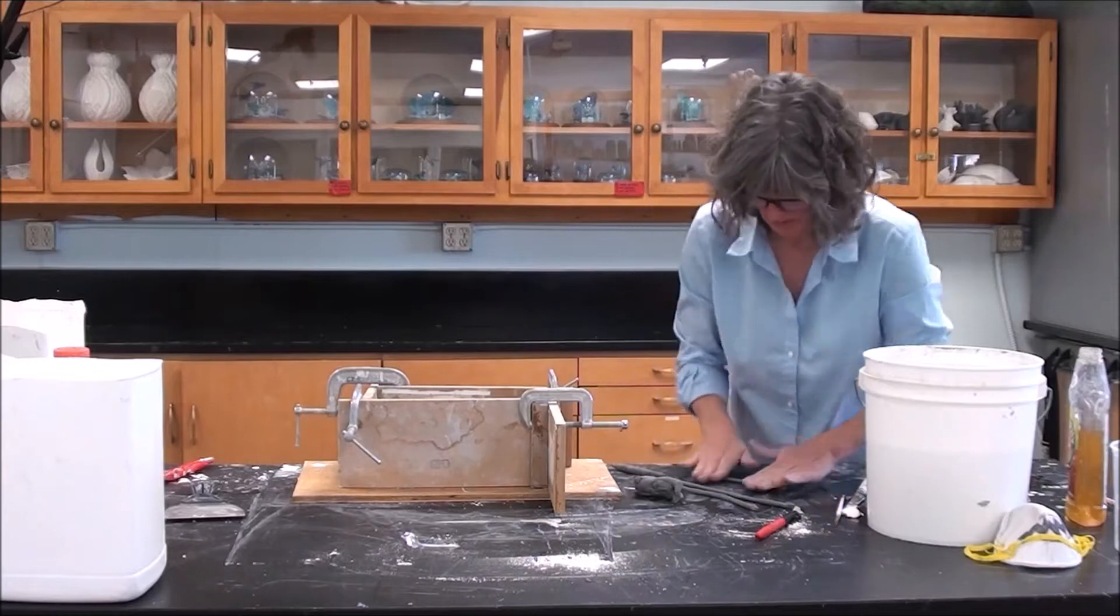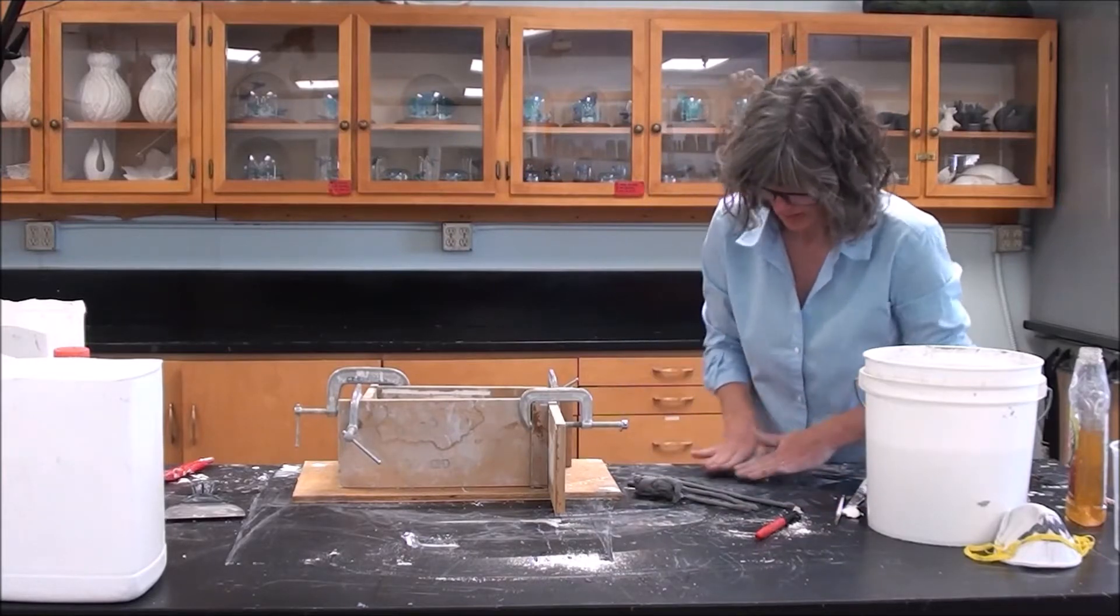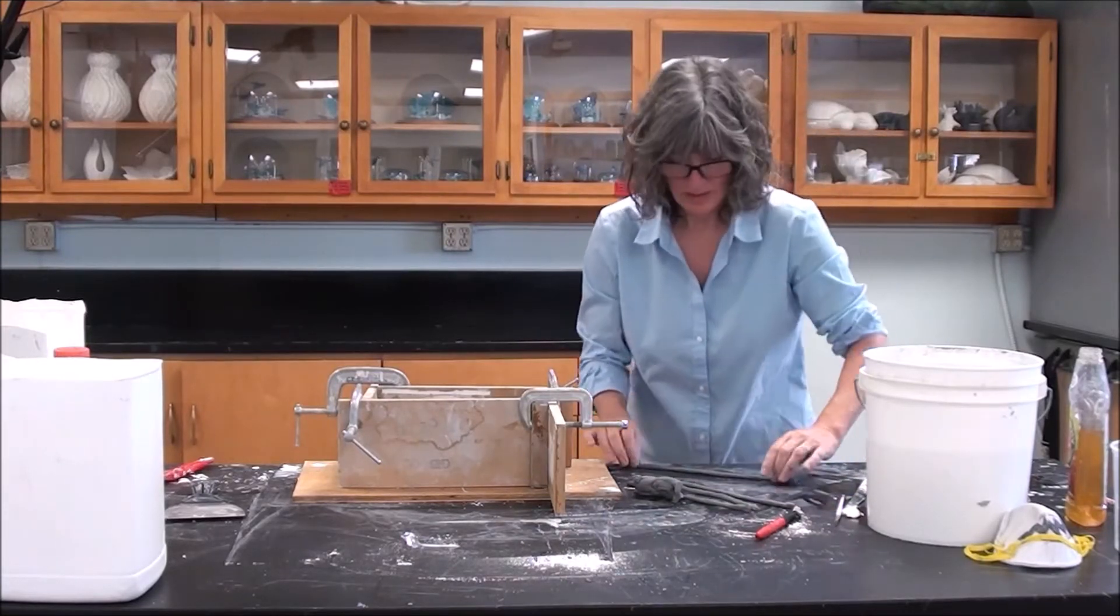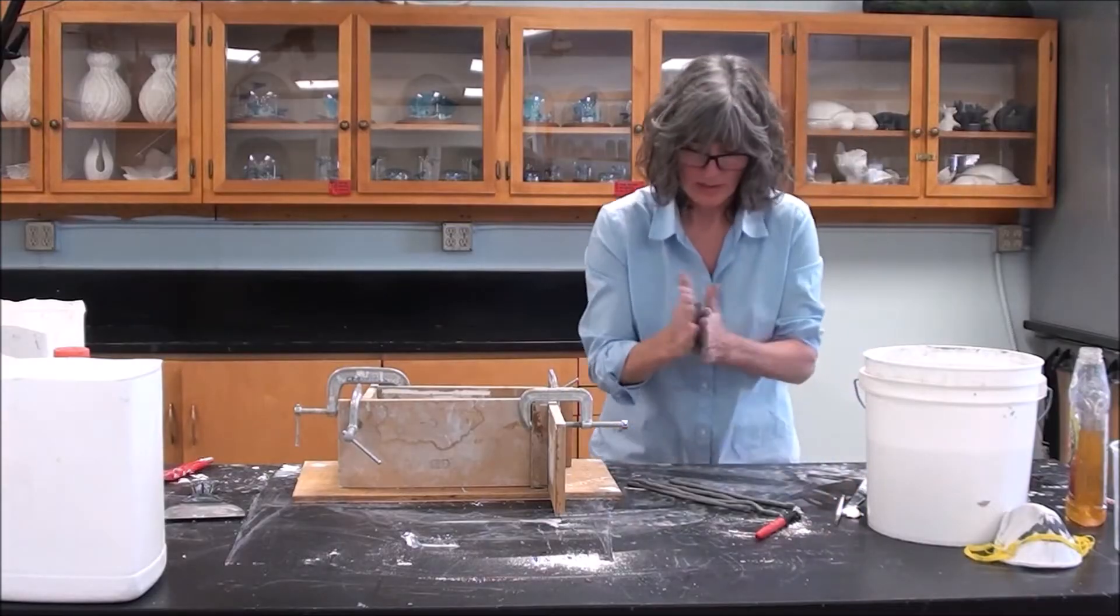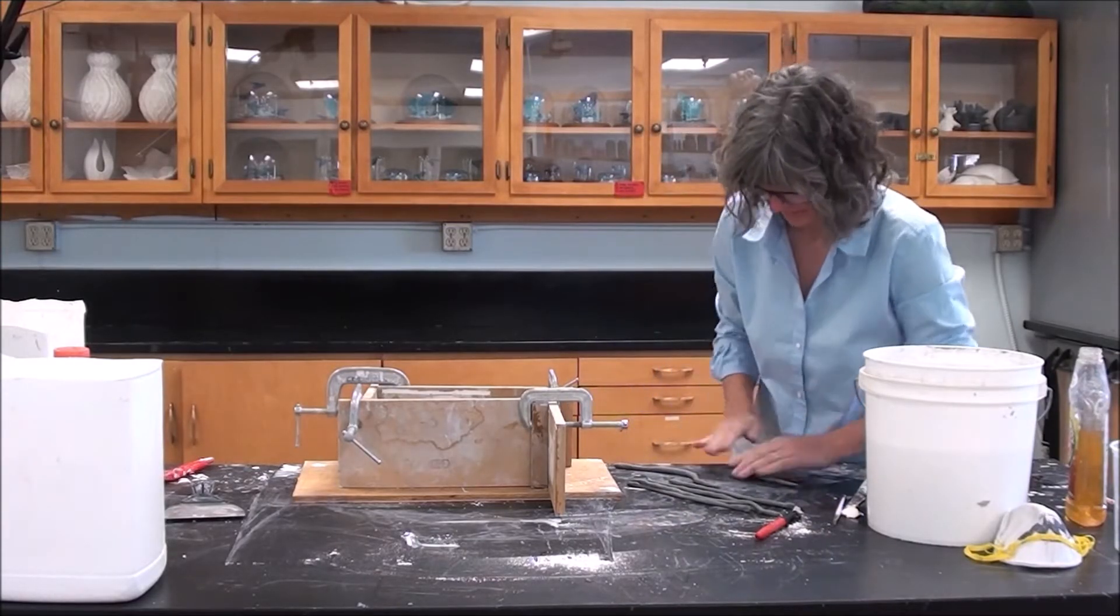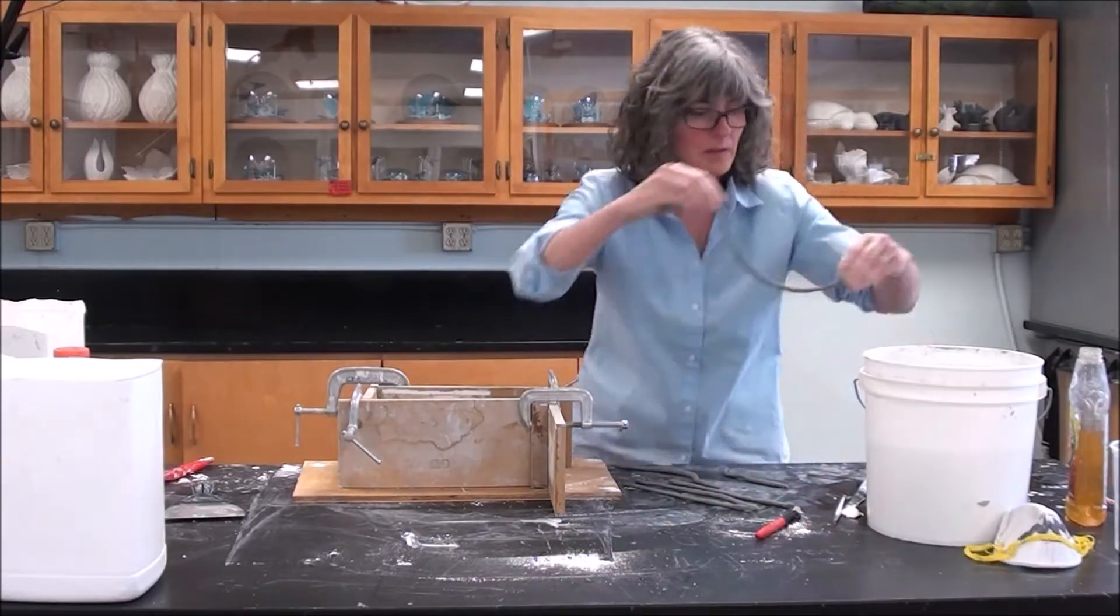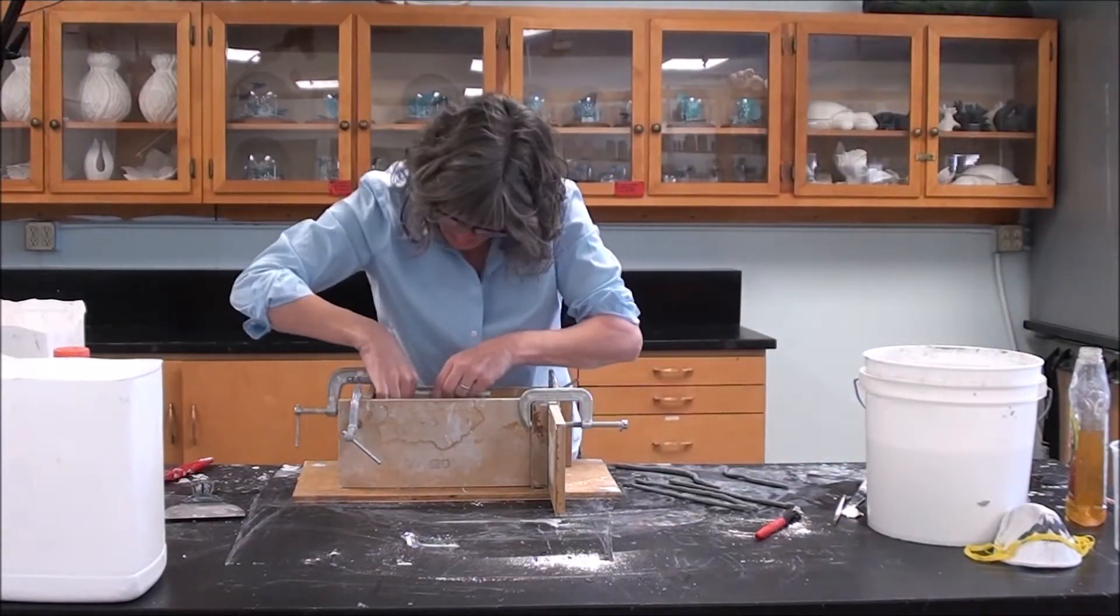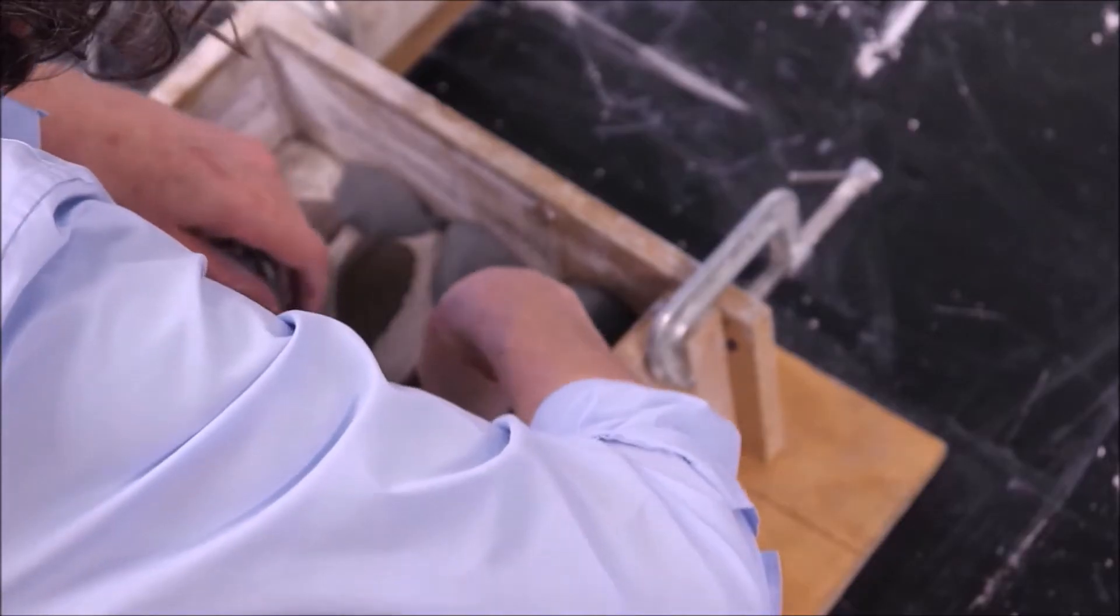So remember, your plaster mold should be like a gigantic sponge. And it should be able to take the water out of the slip and turn it into clay. If there's Vaseline on there, it's preventing it from doing its job. And it's not going to be able to remove the water from the slip.